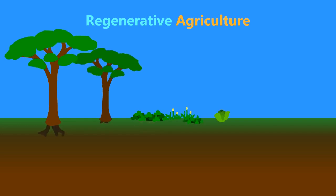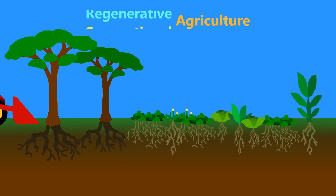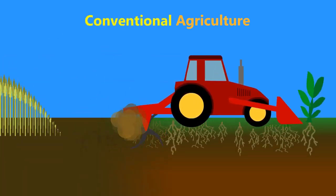Regenerative agriculture is a set of farming practices that increase biodiversity and soil organic matter. Currently, most agricultural practices are devastating to biodiversity.